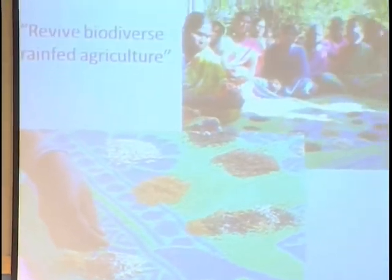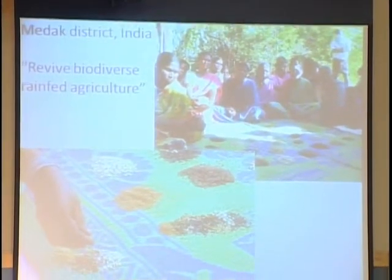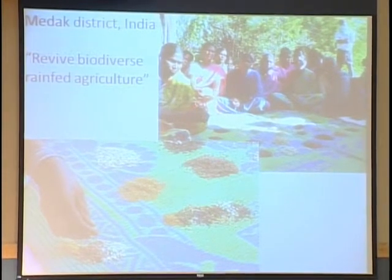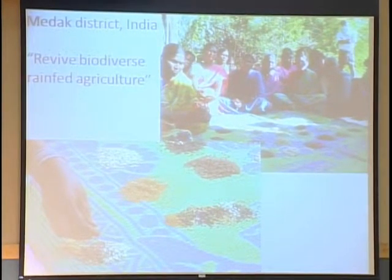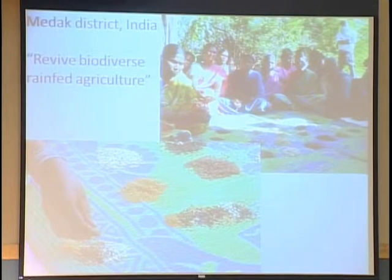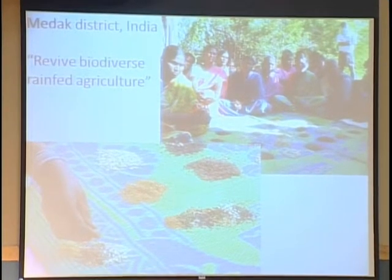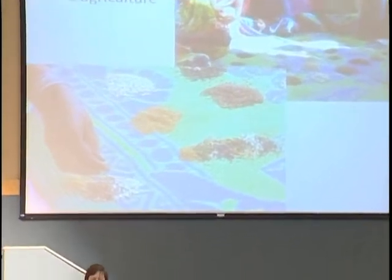An example from India would be from an organization I visited that was seeking to revive biodiverse rain-fed agriculture — producing crops that did not need irrigation. I'll talk more about this in the resource access panel after this.